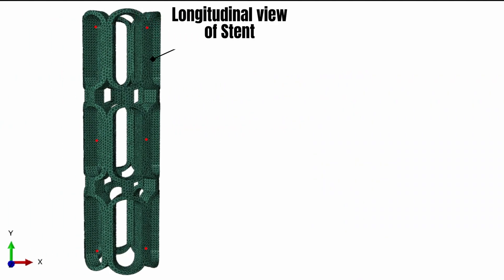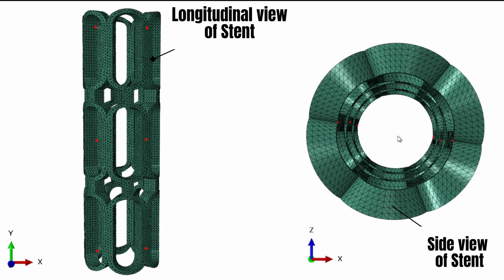As we begin this modeling, the first thing to think about is the stent model we're working with. I've already isolated the points highlighted in red as reference points for extracting the elastic recall of the material. If you look at it from the side view, you can see the positions of these different points on the stent.